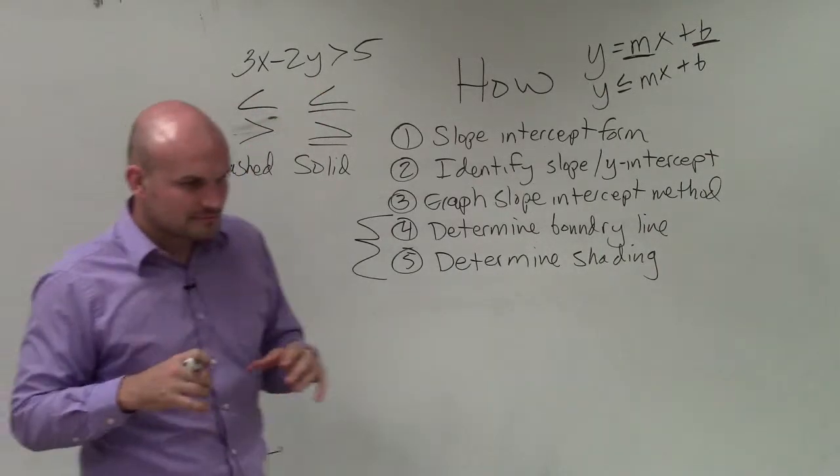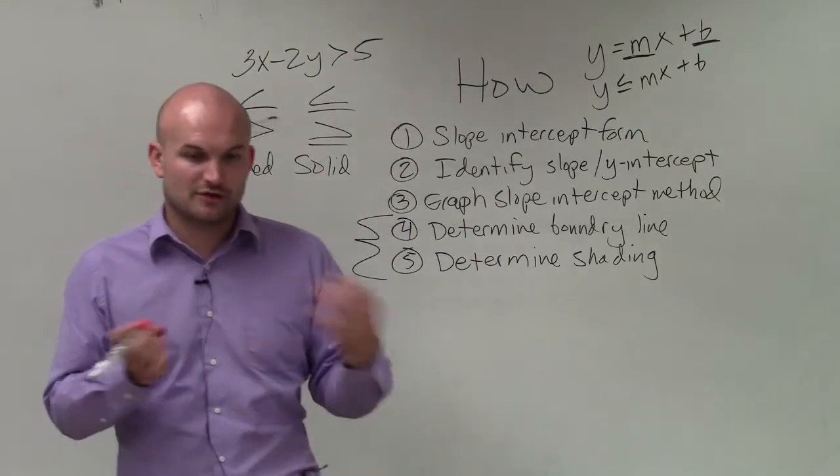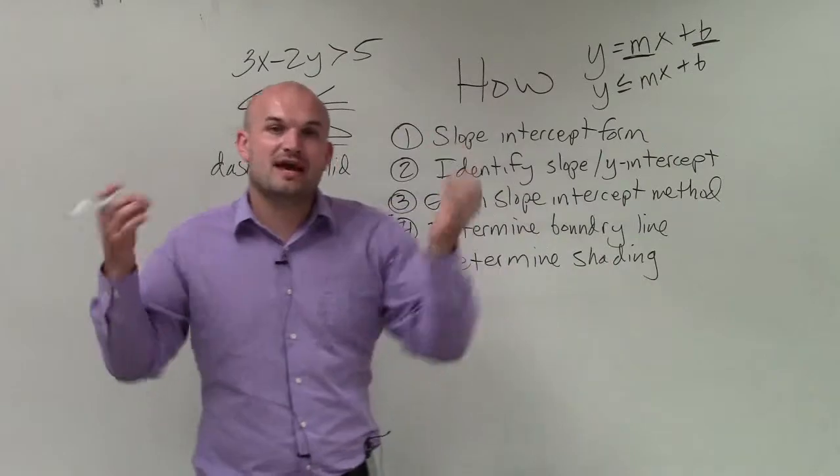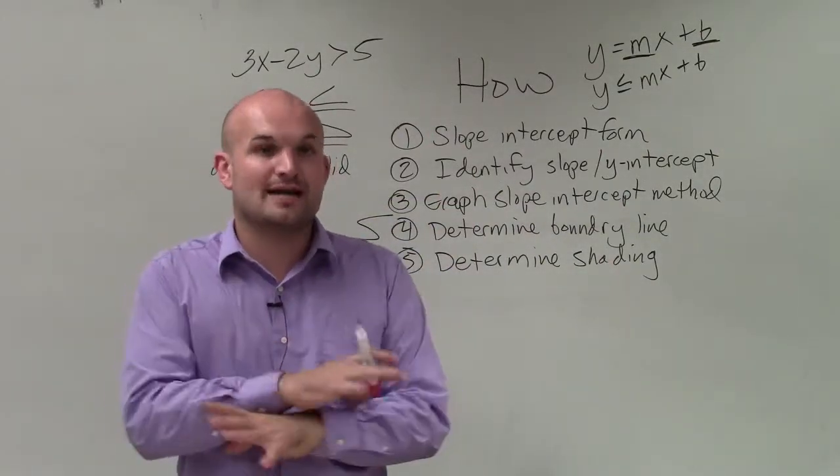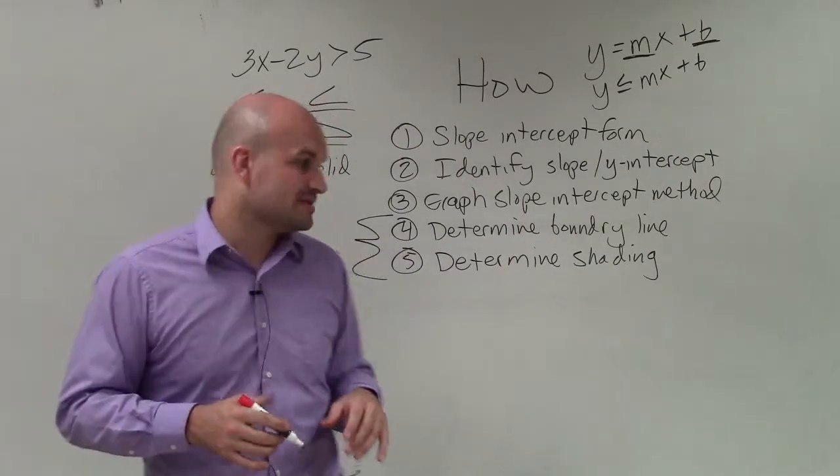So what you're going to do is take your test point, plug it in to your equation for your x and y values. And then if that makes your inequality true, then that means that point is true. And that means if that point is true under your line, all the points under the line are true. So therefore, we represent that by shading.